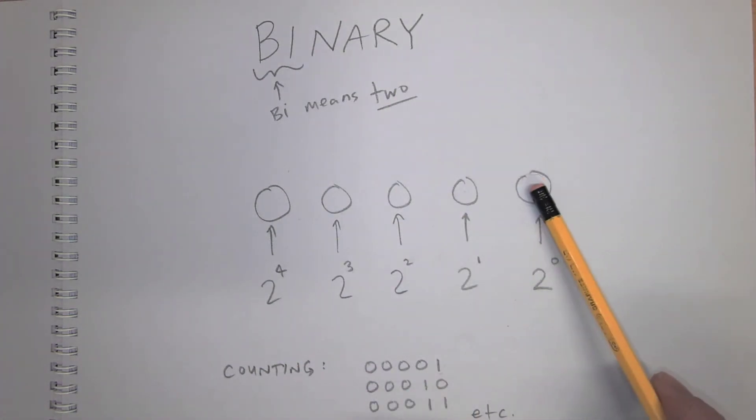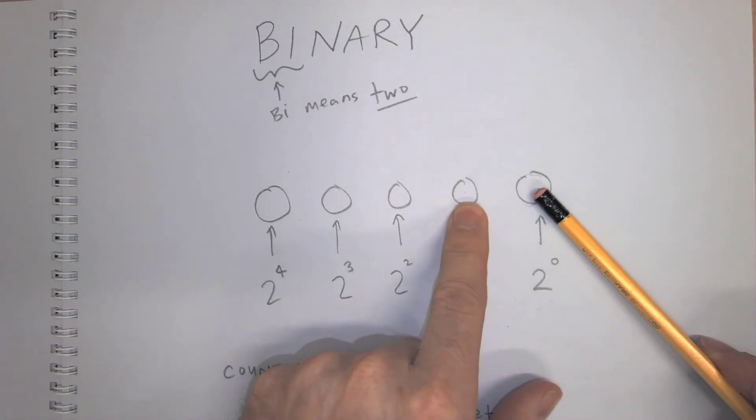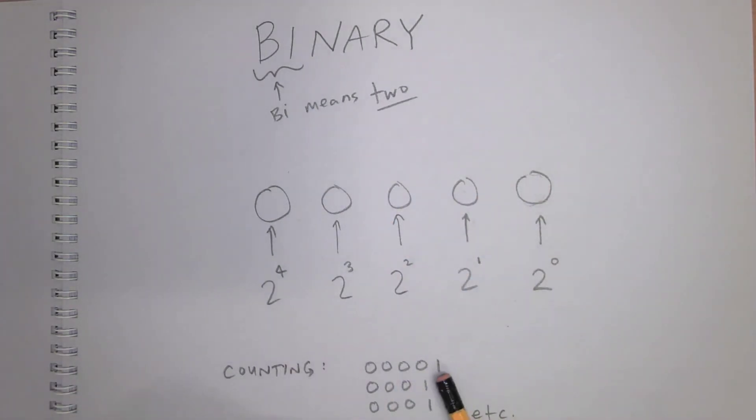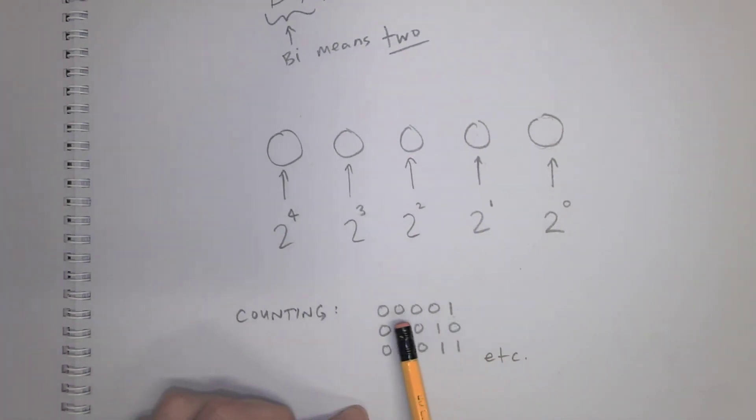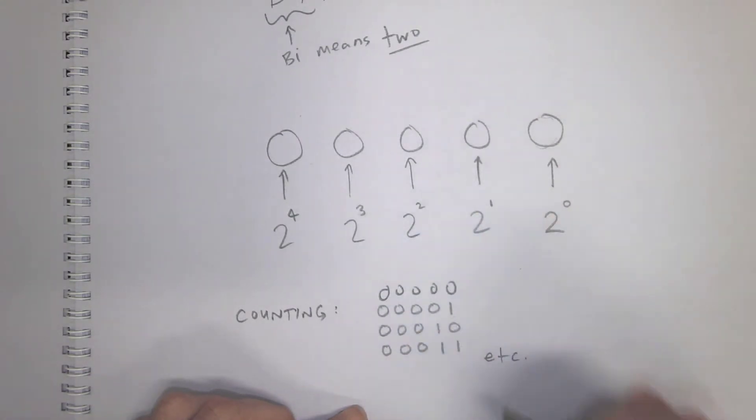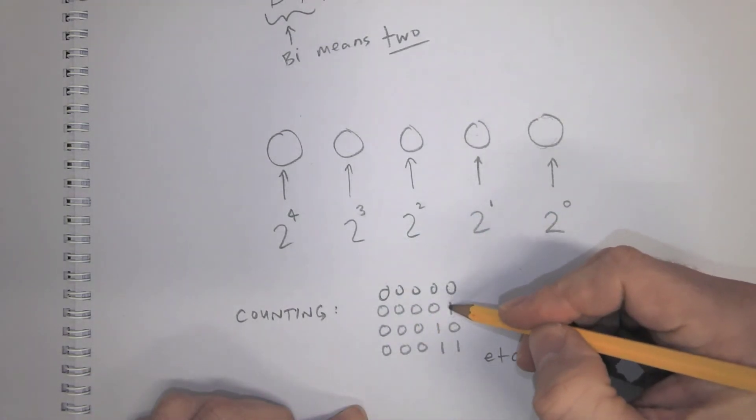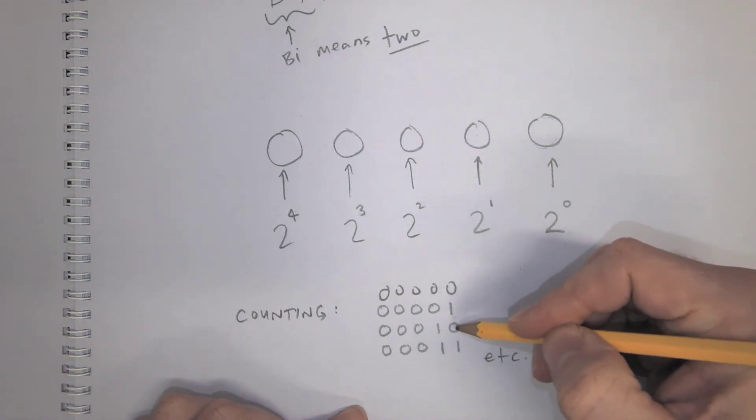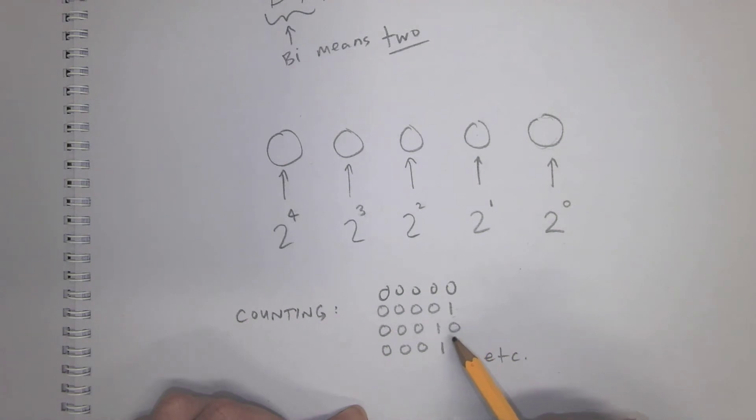So same thing here. So this would start at 0, it goes to 1, and then it resets to 0, and then this becomes a 1. So counting, you start with 0, 0, 0, 0. Then this becomes a 1, and then this would reset, and this becomes a 1. And then we add 1 again, and then when this one resets, this one is already 1, so this has to reset, and it goes like that.